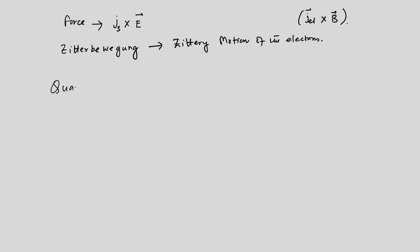Now we have to talk about another important topic: the quantum spin Hall effect. We have talked about the spin Hall effect, but what is the quantum spin Hall effect? Around 2005-6, it was first proposed as a model that would give rise to the spin Hall effect without any charge Hall effect, meaning the system is not subjected to an external magnetic field but has spin-orbit coupling. The usual charge Hall effect vanishes, the Chern number is zero, but another invariant comes up which is non-zero and gives rise to the quantum spin Hall effect.